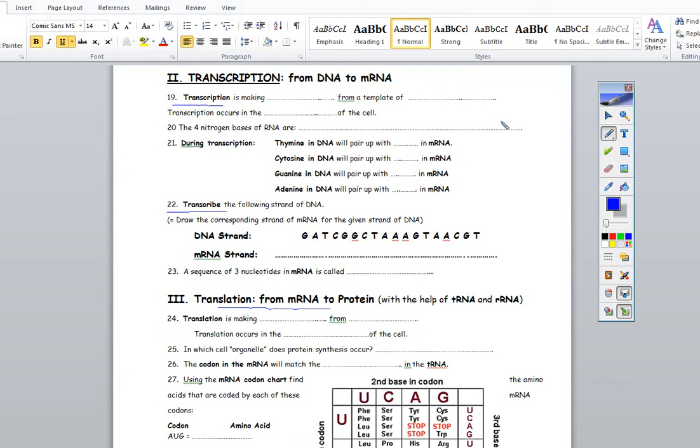Thymine pairs up with adenine, guanine and cytosine are down next. Cytosine pairs with guanine, guanine pairs with cytosine. The biggest mistake people make is they don't know when to base pair and when to use uracil. This is the big difference.